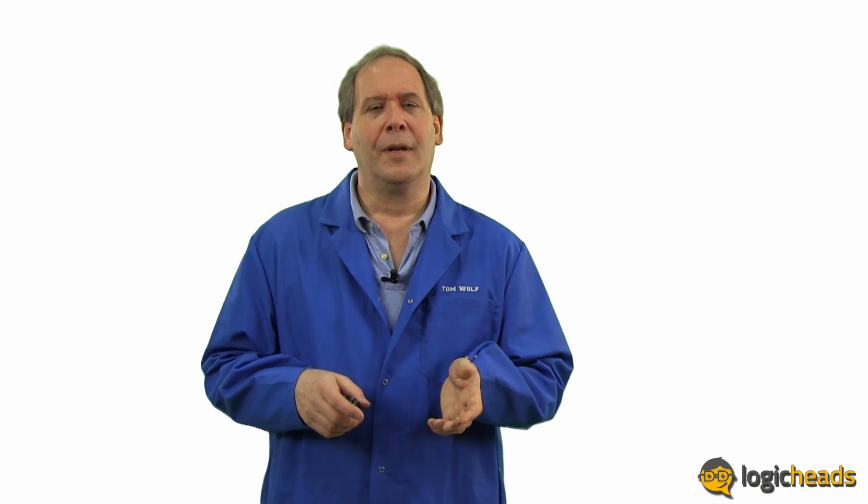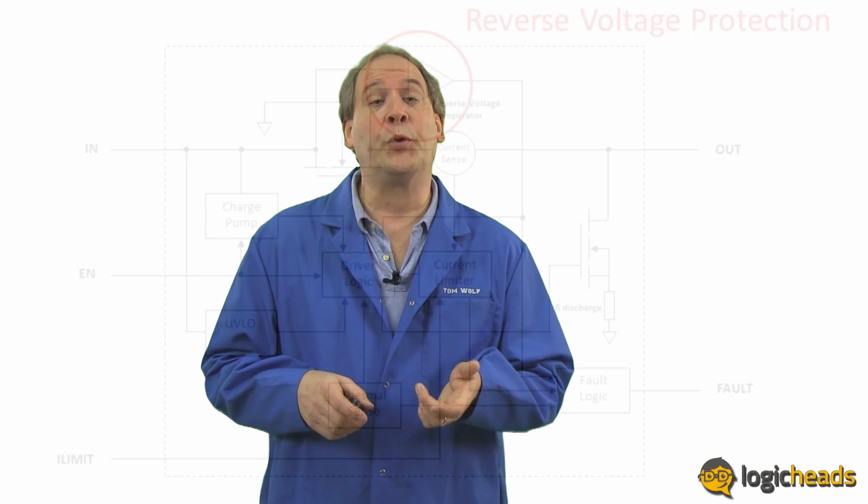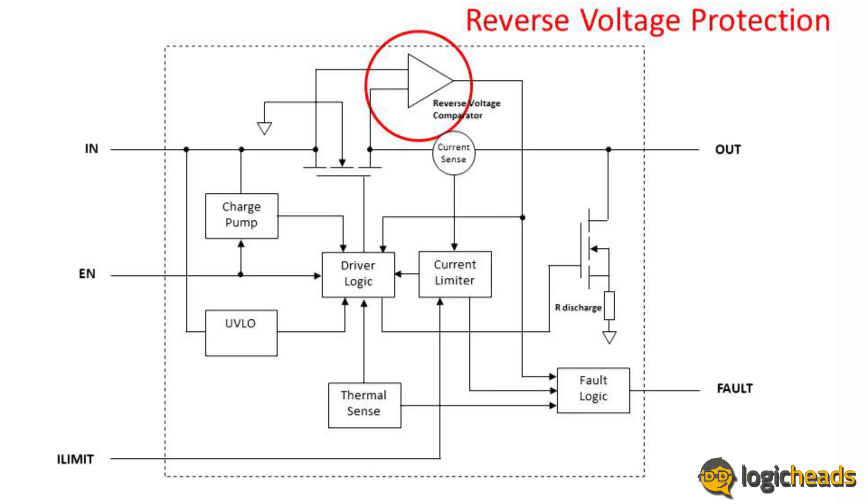Ever accidentally put the batteries into a toy backwards? If you were lucky no damage occurred. A reverse voltage protection circuit can be added to a load switch to guarantee that the switch is safely opened in case this happens.